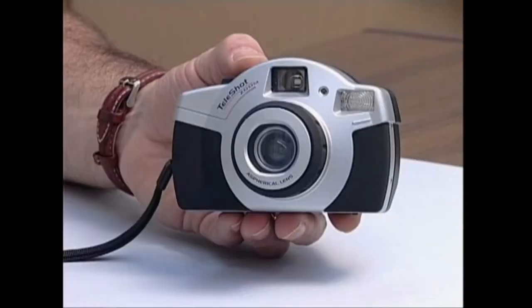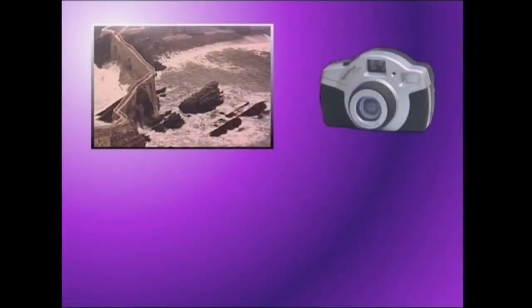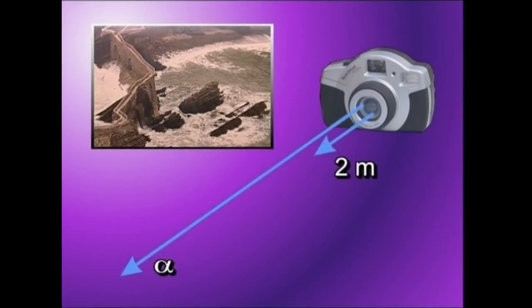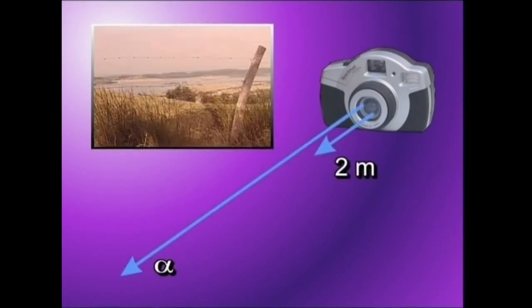Argazki kamerek dauzkaten aginteak eta euren betekizunak aztertuko ditugu. Lehenengo, fokatzeko ustaia ezagutuko dugu. Argazki kamera arruntek, fokatze finkoa dutenek ez dute izaten inolako aginterik fokatzeko, eta aurre aldean bi metrotik aurrera duten guztia fokaturik atera oi dute.